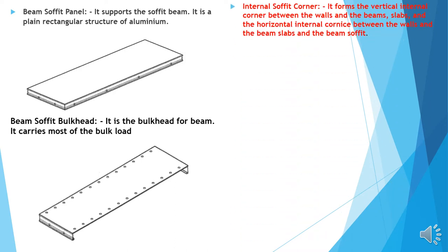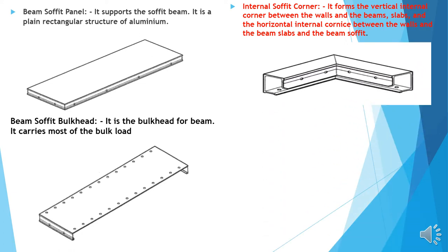Internal soffit corner: It forms the vertical internal corner between the walls and the panels, slabs, and the horizontal internal cornice between the walls and the beam slabs and the beam soffit. The image of it has been shown here. This is the internal soffit corner.